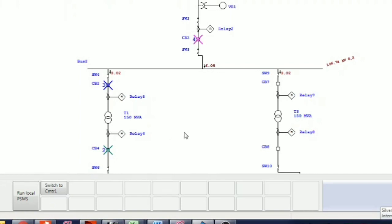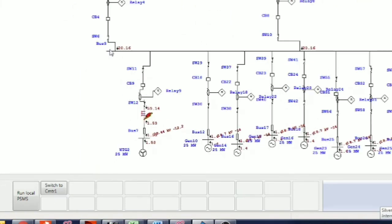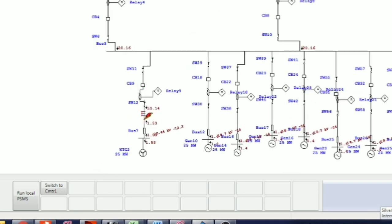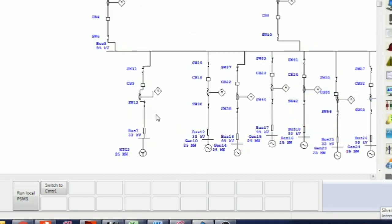First the downstream breaker trips, then upstream, thereafter the next upstream, and in the last the source side circuit breaker trips. These simulations we will learn through ETAP.